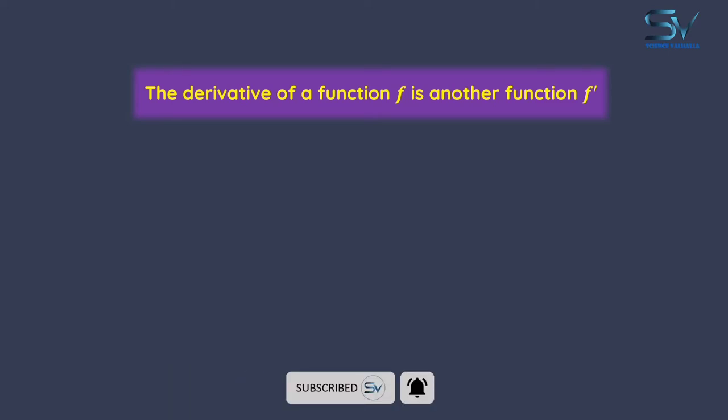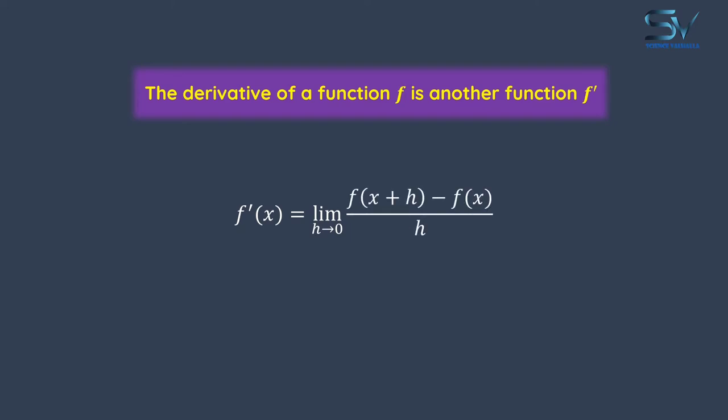If the slope is function of x, then the function's derivative is also a function of x. So the derivative of function f is another function that we will refer to as f dash. The definition of slope of tangent line is the definition of the derivative of the function.